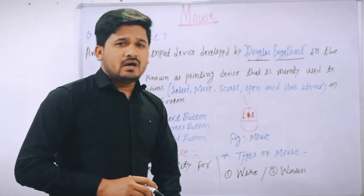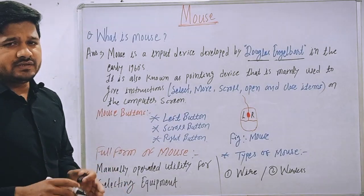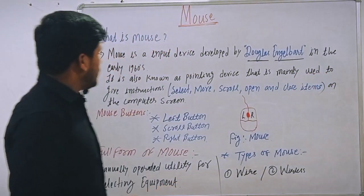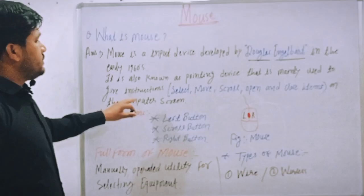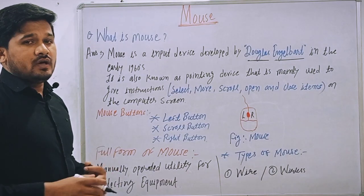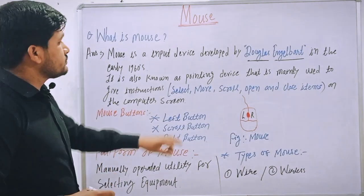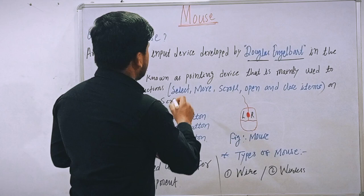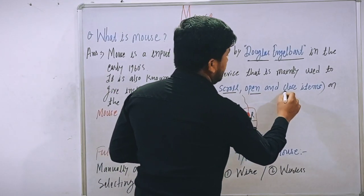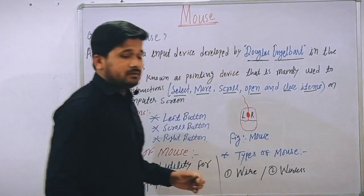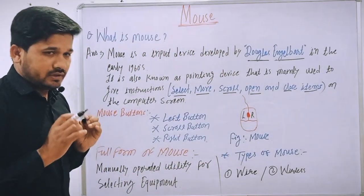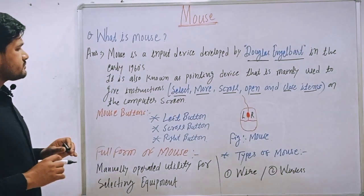Mouse is also known as a pointing device. It is mainly used to give instructions — to select, move, scroll, open, and close items on the computer.